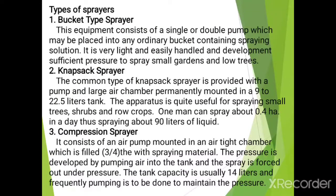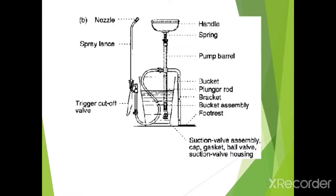Now the types of sprayer. First is the bucket type sprayer. This equipment consists of a single or double pump which may be placed into an ordinary bucket containing a spraying solution. It is very light, easy to handle, and develops sufficient pressure to spray small gardens and low trees. This is the diagram of the bucket type sprayer.